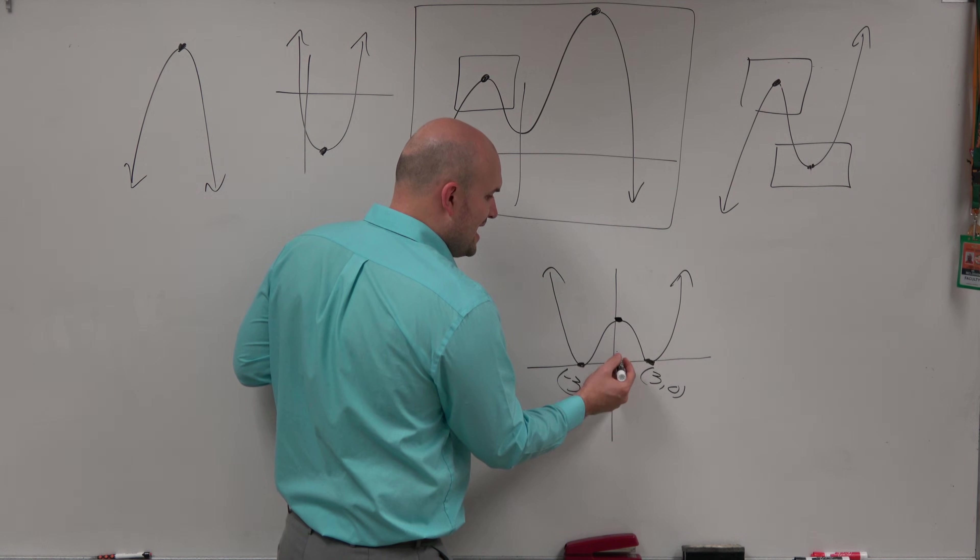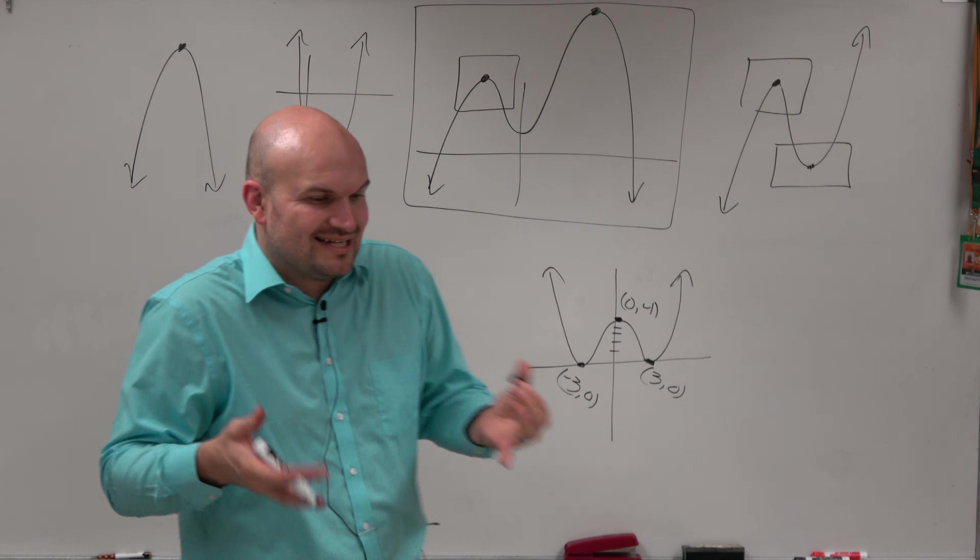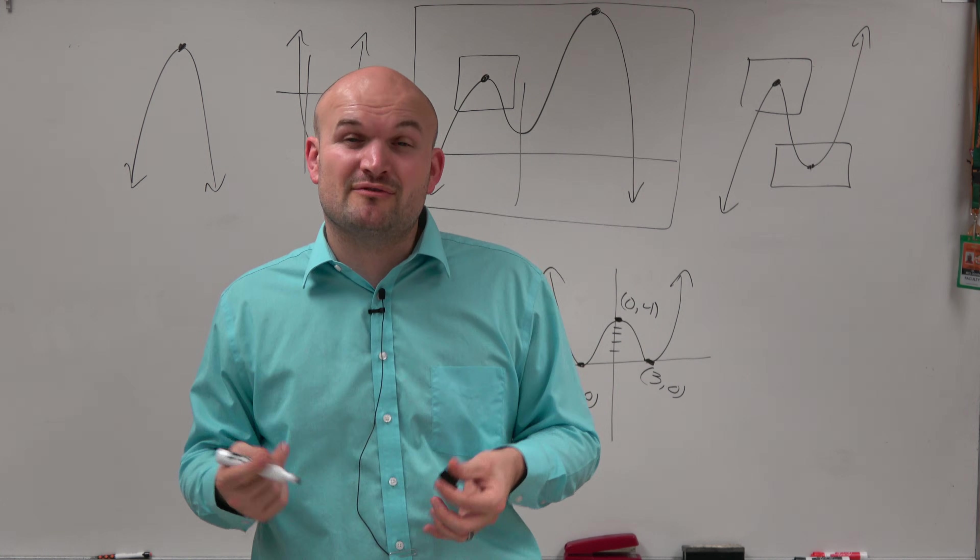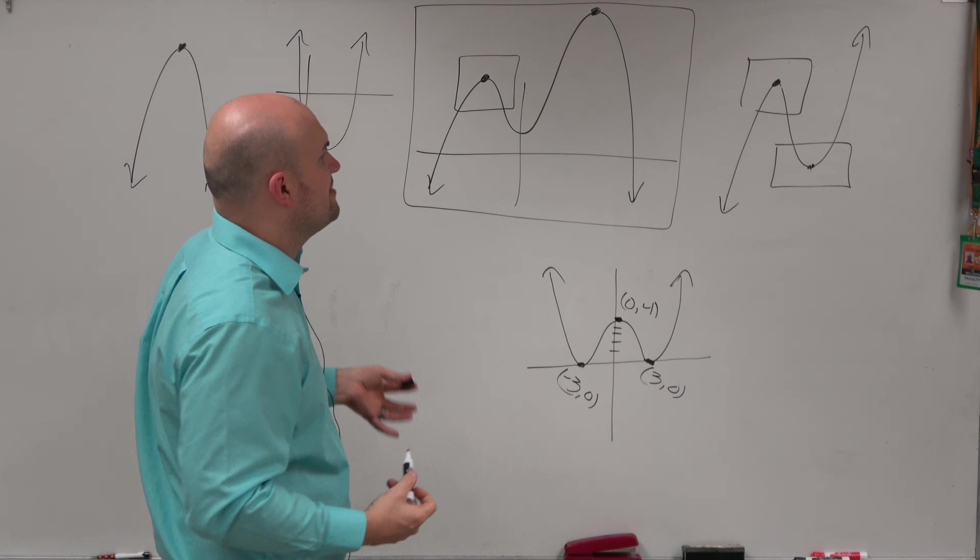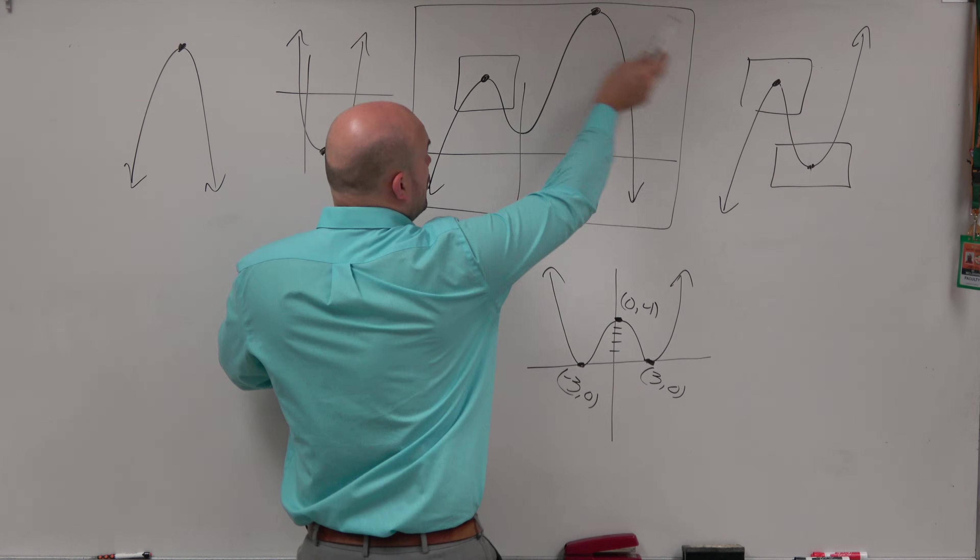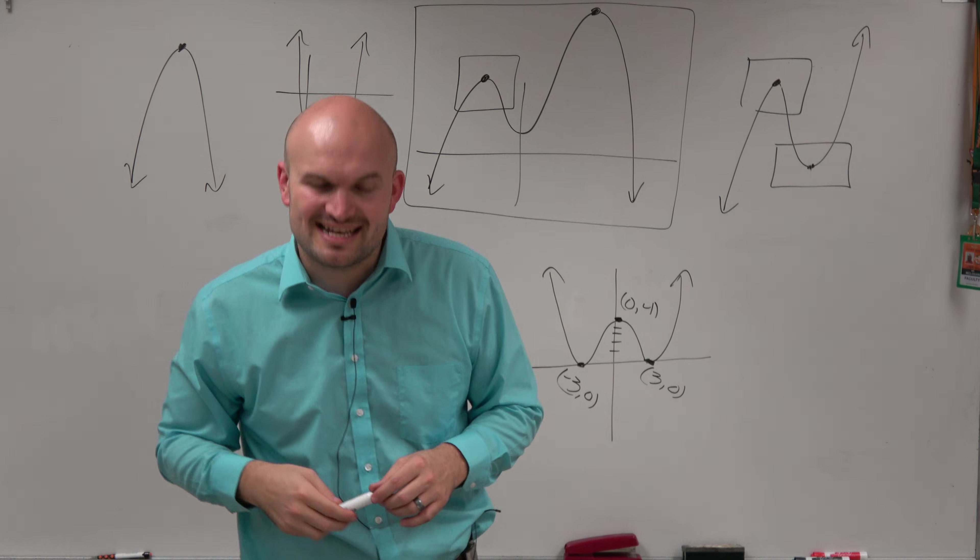There is a local max here. Let's call this zero comma four. There is a local max at zero comma four. So basically, that's the idea when identifying extrema from a graph—finding those maximum and minimum values, but also making sure you understand the difference between global and local. Hope you enjoyed, thanks.